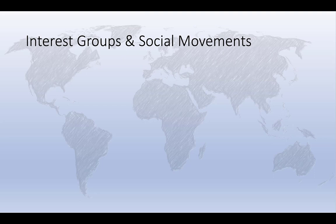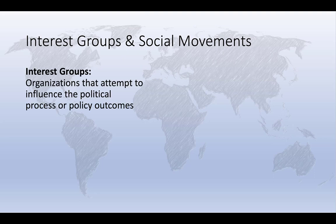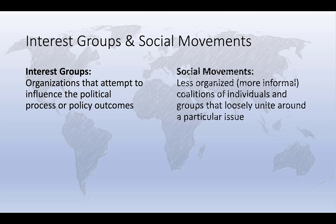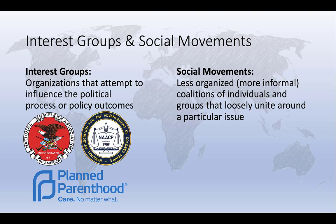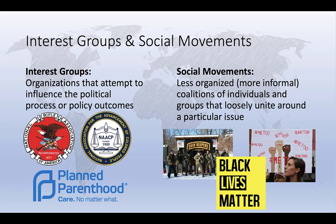Let's start with some basic definitions. Interest groups can be thought of as organizations that attempt to influence the political process or policy outcomes. This is different from social movements, which are less well organized or more informal coalitions of individuals and groups that loosely unite around particular issues, most often in opposition to the status quo. Thus, we might think of groups like the National Rifle Association, the NAACP, or Planned Parenthood as interest groups, while the Militia Movement, Black Lives Matter, and Me Too would be examples of social movements.